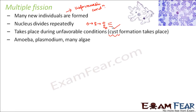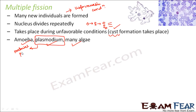Once favorable conditions come back, all those multiple nuclei are released and each nucleus gives rise to a new daughter cell. This happens in amoeba, plasmodium, and many algae. Plasmodium is more popularly known for causing malaria — it is the malarial parasite and is also a protozoa.